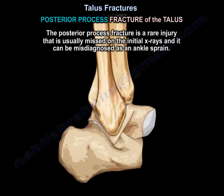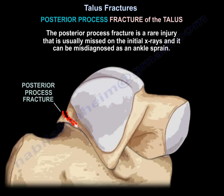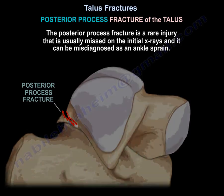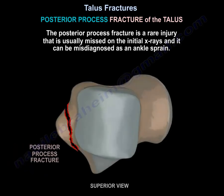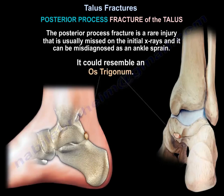The posterior process has a medial and lateral tubercle separated by a groove for the flexor hallucis longus. Posterior process fracture is a rare injury, usually missed on initial x-rays, and can be misdiagnosed as an ankle sprain. It can resemble an os trigonum.